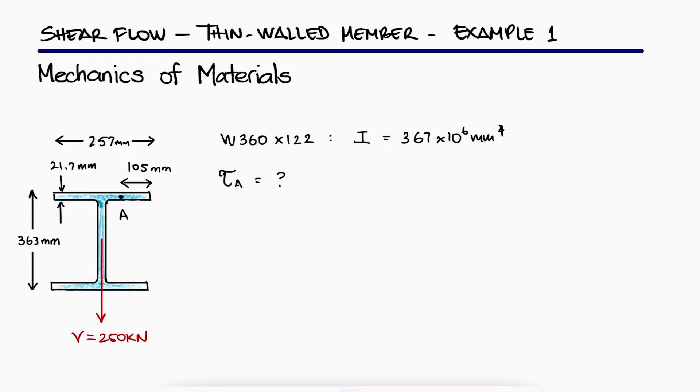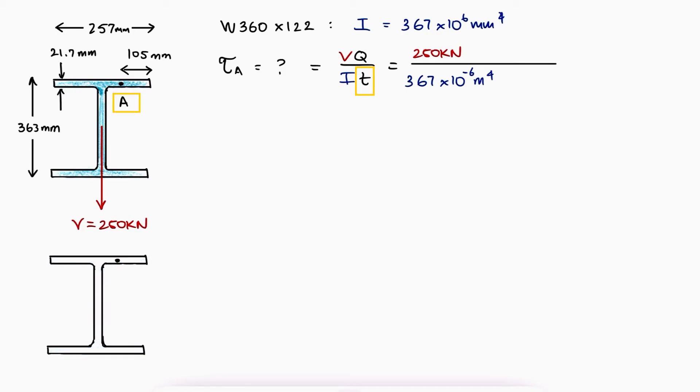The shearing stress at point A will be given by VQ over IT. The second moment of area is given, as is the shear force V. The thickness at A will be the dimension perpendicular to the shear flow stress vector, which in this case is 21.7mm.